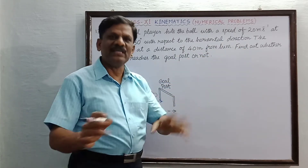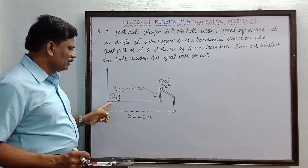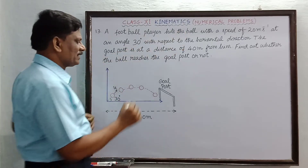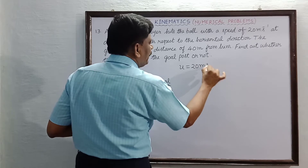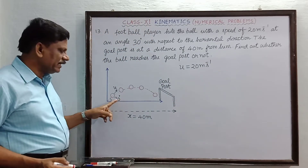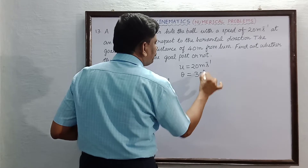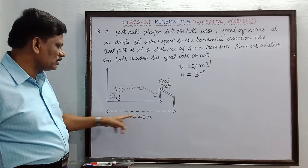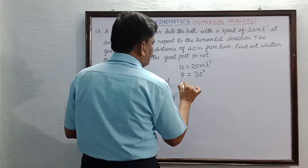A football player kicks the ball. The initial velocity u is equal to 20 meters per second. The angle of projection theta is equal to 30 degrees with respect to the horizontal. The distance of the goal post along the x-axis from the player is equal to 40 meters.